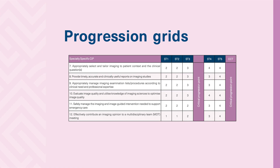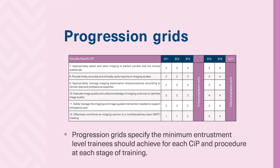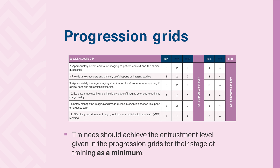The curriculum includes progression grids. The progression grids specify the minimum entrustment level trainees should achieve for each CIP and procedure at each stage of training. Trainees should achieve the entrustment level given in the progression grids for their stage of training as a minimum, although they may achieve above this level in some CIPs. The progression grid provides a clear expectation of level for each year of training, so a trainee has a clear idea of the minimum level of entrustability required at each year of training.